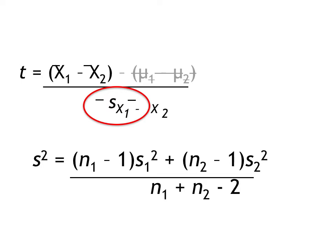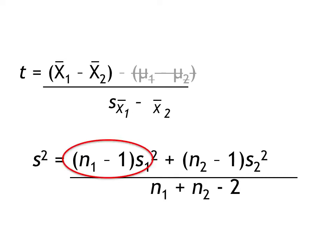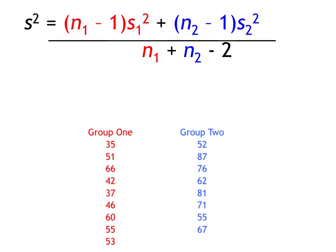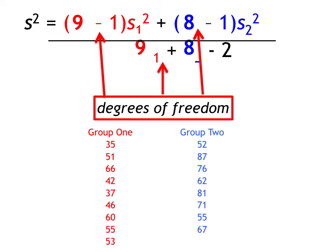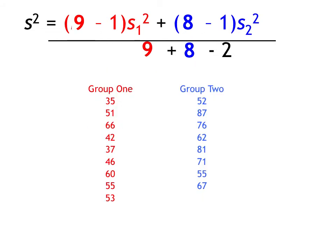Remember that variance is simply the standard deviation squared, and you know how to figure the variance and standard deviation from previous sections in this course. If you look carefully, you'll see that we're simply using the size of the group to weight the variance for group 1, and the size of group 2 to weight the variance for group 2. The denominator simply uses the degrees of freedom. I'm going to run the scores through a spreadsheet and have it calculate the standard deviation for each group.